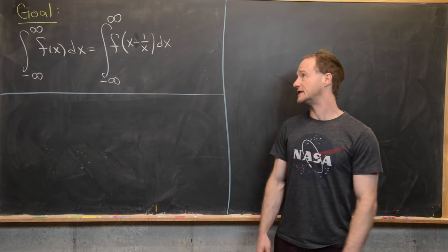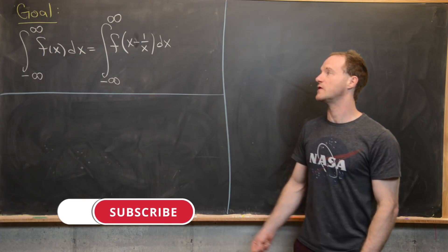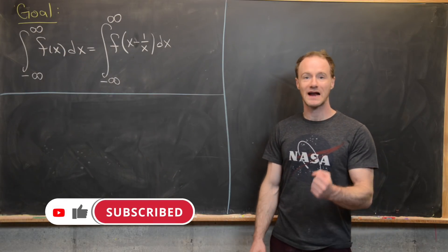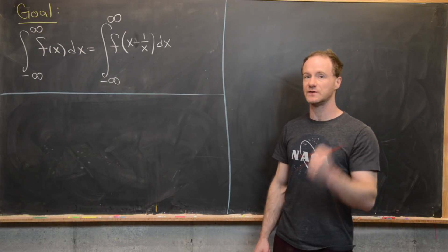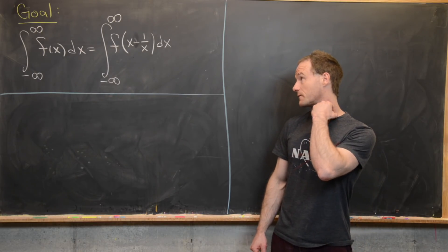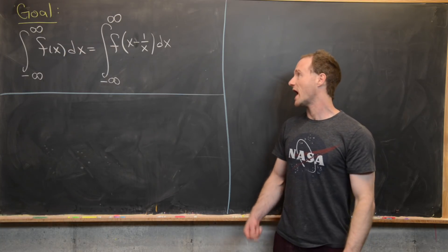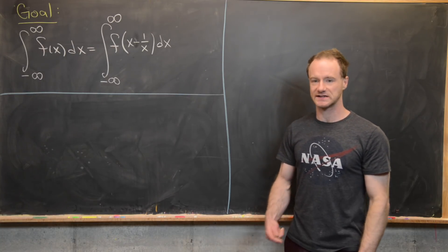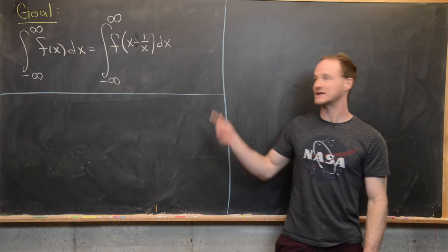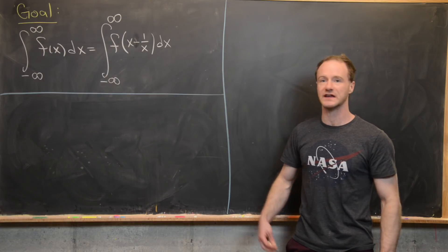Here we're going to derive a nice little integral identity. In particular, we're going to show that as long as these integrals converge, the integral from minus infinity to infinity of f(x) dx is the same as the integral from minus infinity to infinity of f(x - 1/x) dx. In other words, we can compose x - 1/x inside the function and not change the value of the integral.